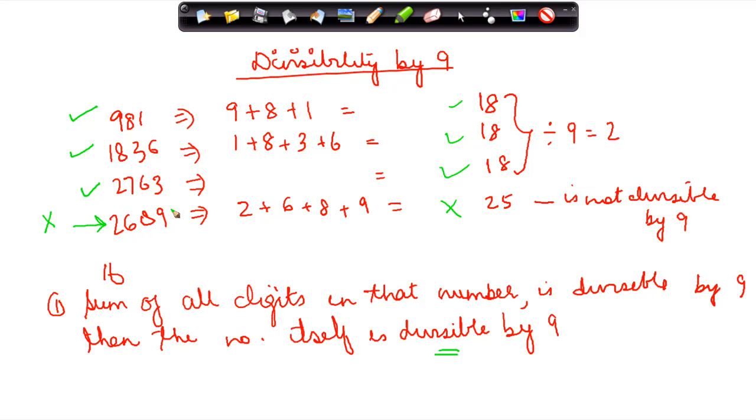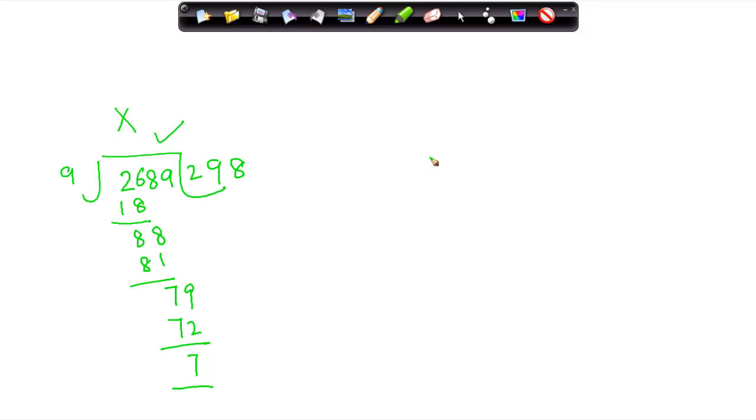Now let us take 2763. 9 goes into 27 three times. 6 cannot be divided by 9, so I take a zero here. 9 times 7 is 63, which gives me a remainder of 0. So because the sum of these 4 digits itself is divisible by 9, this number is also divisible by 9.